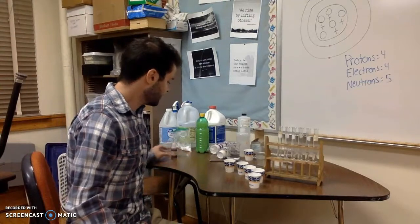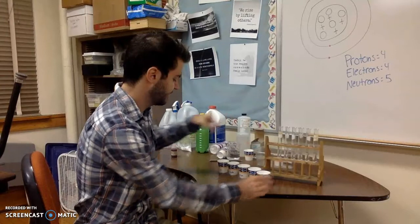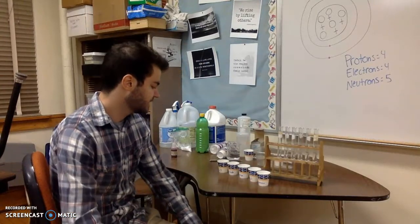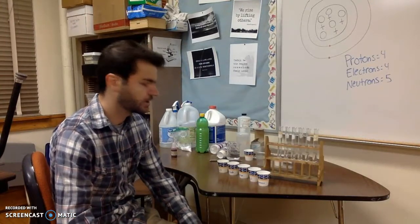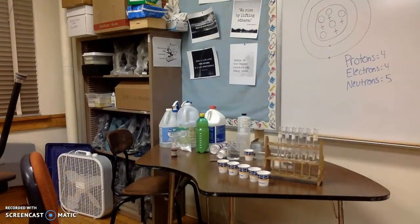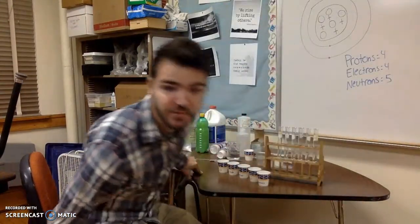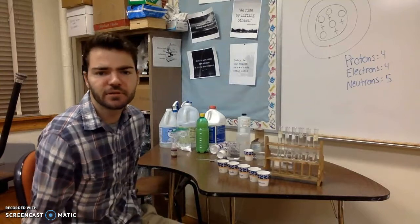So we have five different substances: lemon juice, baking soda, vinegar, water, and ammonia. We have those five different things, and we're going to do two different tests.